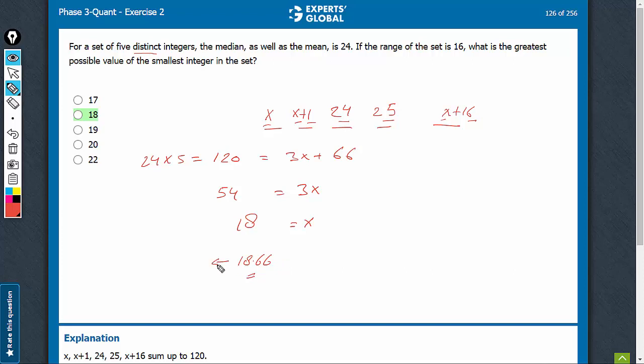So 18.66 would also have been rounded off to 18, and 18.33 would also have been rounded off to 18 only. In this case, we anyway have an integer. We don't have to round off. The answer is 18.